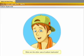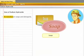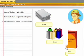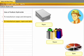What are the other uses of sodium hydroxide? It is used to manufacture soaps and detergents. Sodium hydroxide is also used to manufacture paper, artificial fibers like rayon and dyes.